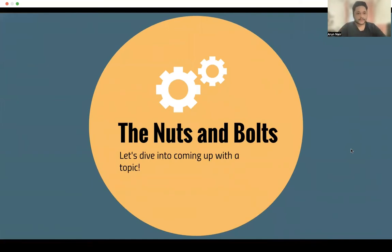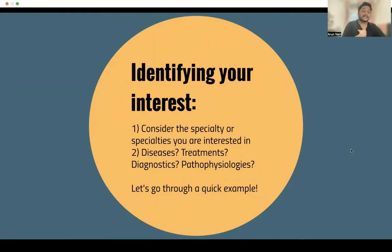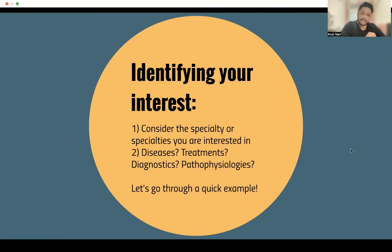First thing is: how do we come up with a topic? When it comes to coming up with a topic, you have to identify your interest. Consider the specialty or specialties that you're interested in. For example, I am a hardcore pediatrics fan — every research idea I want to develop would be to do with pediatrics, because that's something I'm passionate about. You can look at anything from diseases, treatments, diagnostic methods, pathophysiologies, incidences, and risk factors — these are areas you can target for literature reviews.